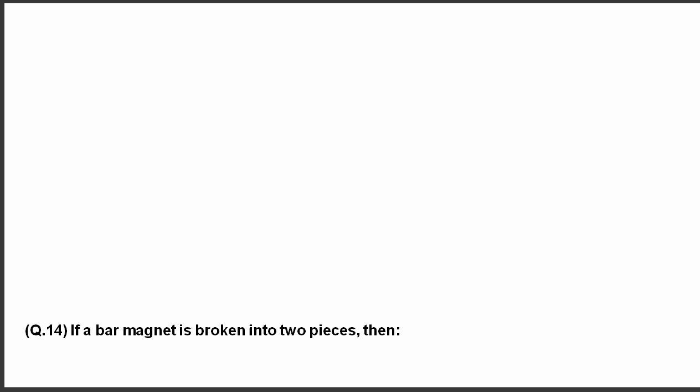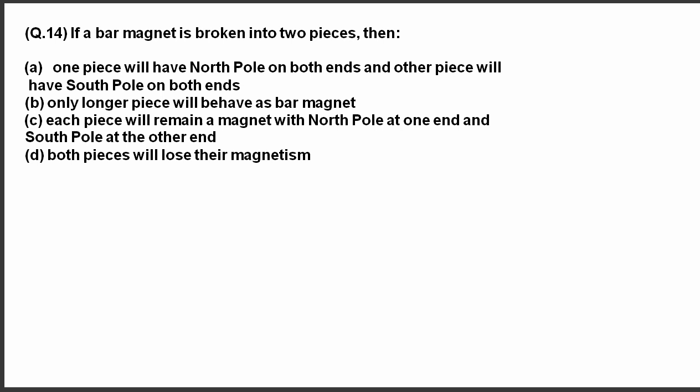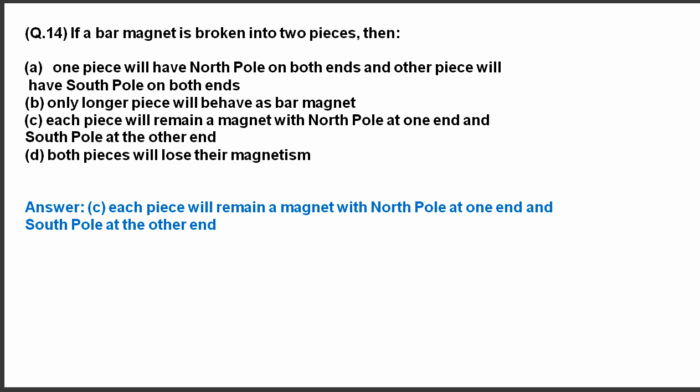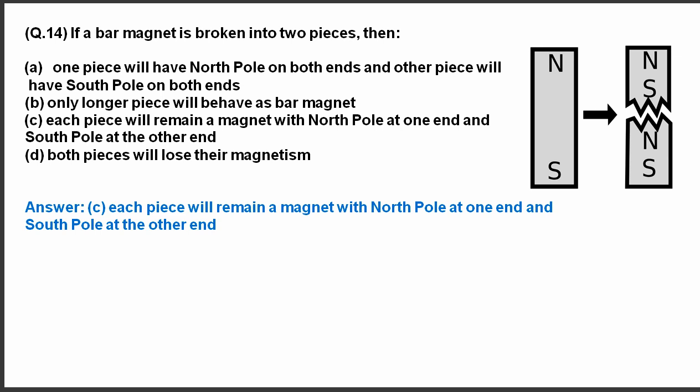Question number 14. If a bar magnet is broken into two pieces then? Have a look at the options. The correct answer is that if a bar magnet is broken into two pieces then each piece will remain a magnet with north pole at one end and south pole at the other end.